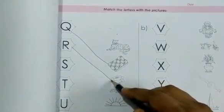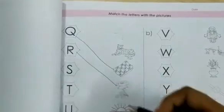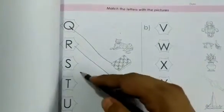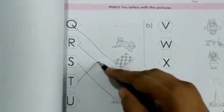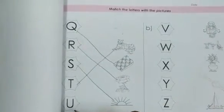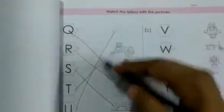I'll match this picture. Then S. S for sun. T for tiger. U for umbrella. Okay?